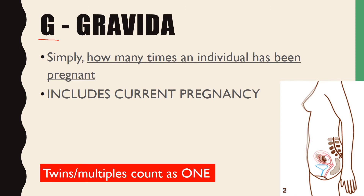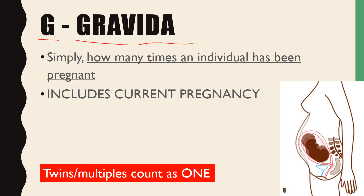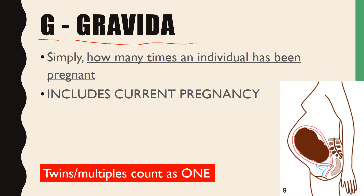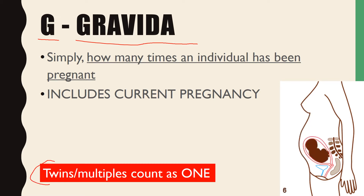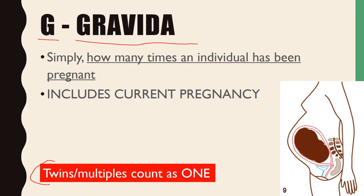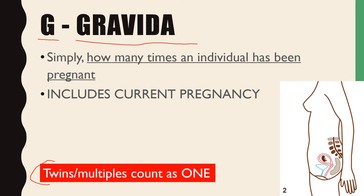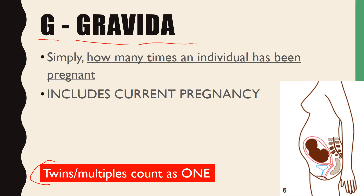The G stands for Gravida, and this simply means how many times has the individual been pregnant — and it also includes the current pregnancy. Important to remember: twins or multiples only count as one. If someone is pregnant with triplets, it does not count as three pregnancies running concurrently; it just counts as one pregnancy.